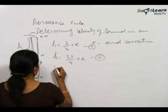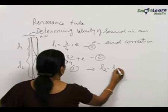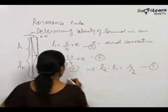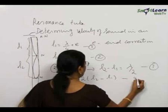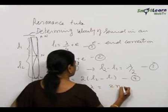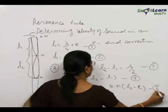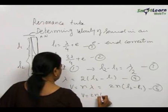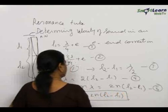Subtracting equation 1 from equation 2 gives L2 − L1 = λ/2. So λ = 2(L2 − L1), and V = Nλ, where the frequency N is the same as the frequency of the tuning fork. Therefore, V = 2N(L2 − L1), which gives the velocity of sound in air at room temperature.